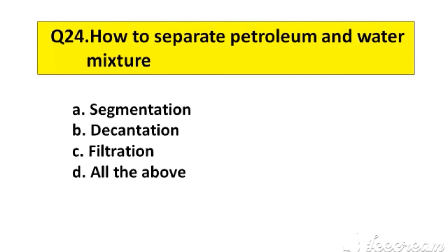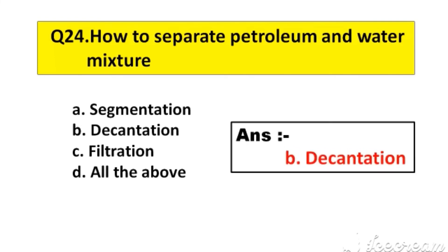Question number 24. How to separate a petroleum and water mixture? Option A: Segmentation, B: Decantation, C: Filtration, D: All the above. The right answer is option B: Decantation.